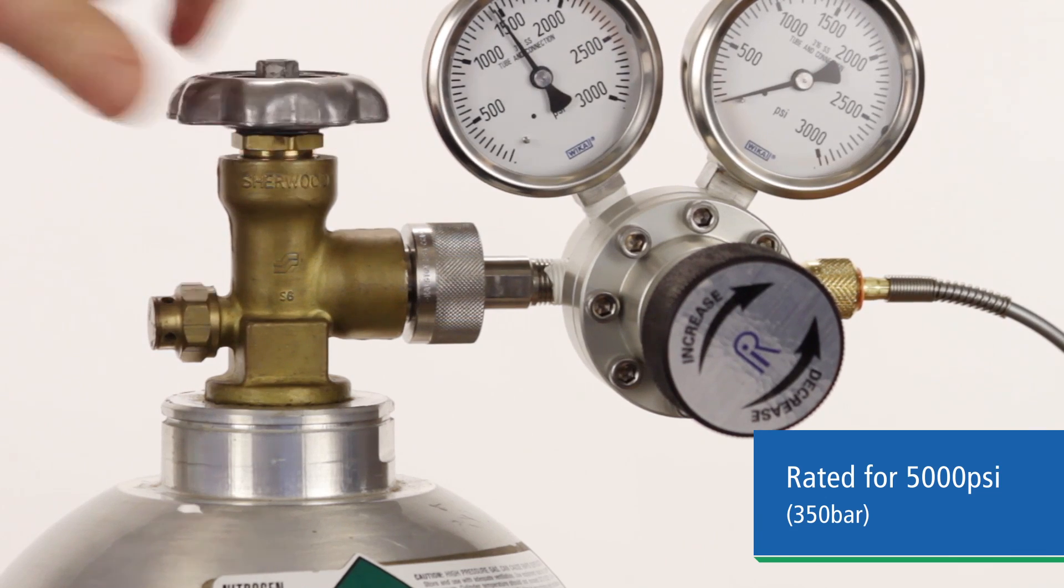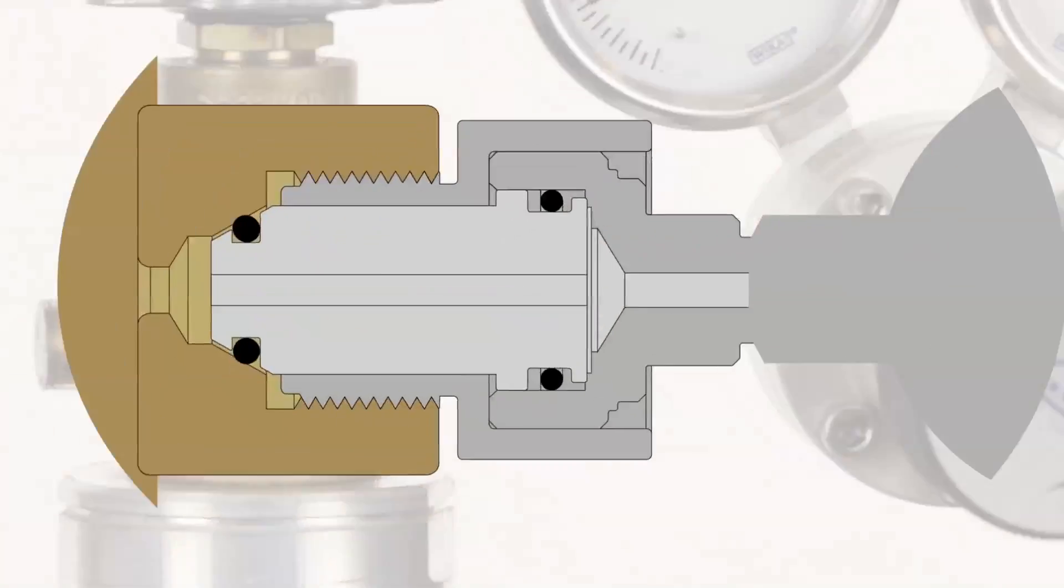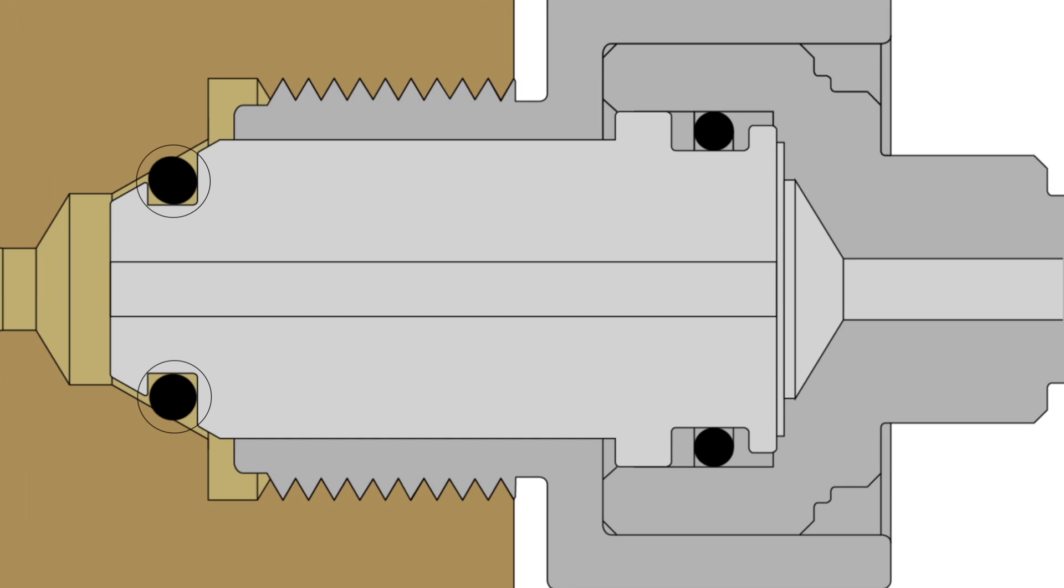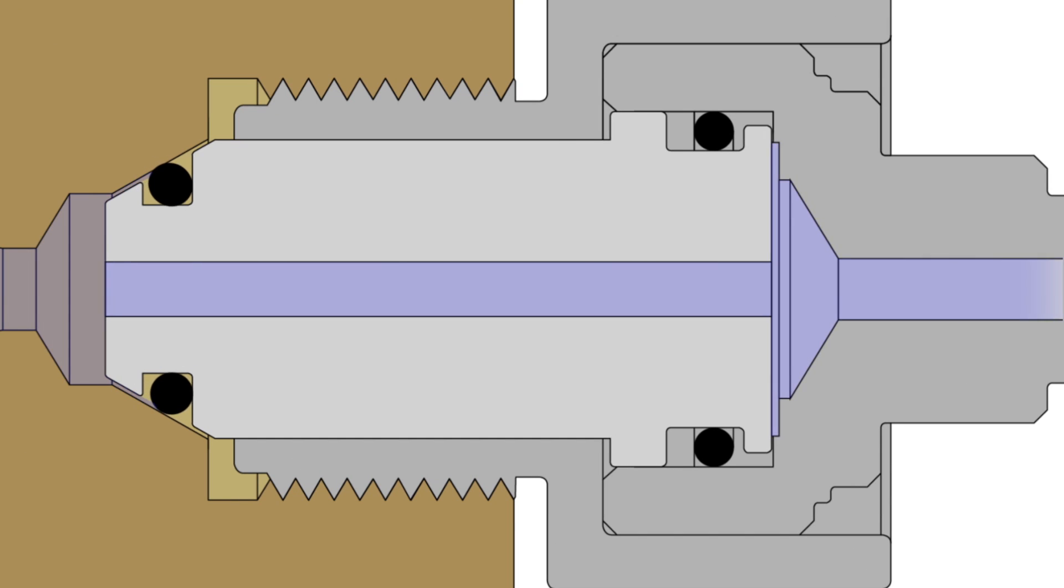When pressure is applied, the Ralston CGA 580 quick connect is pressed against the CGA cone in the valve making a bubble tight seal. The higher the pressure, the better the seal.